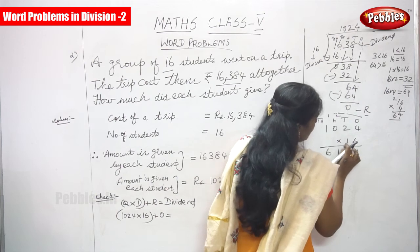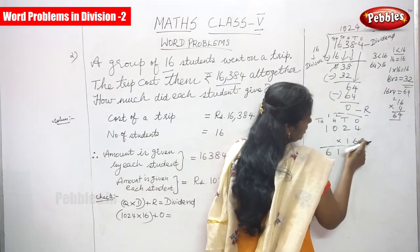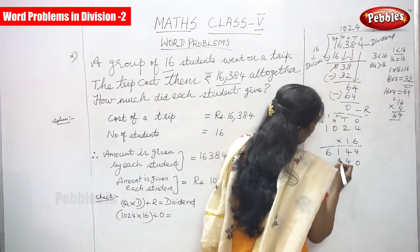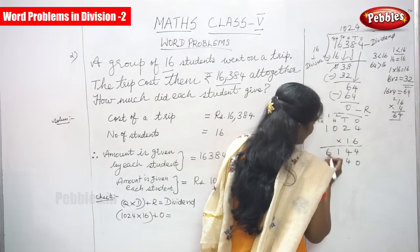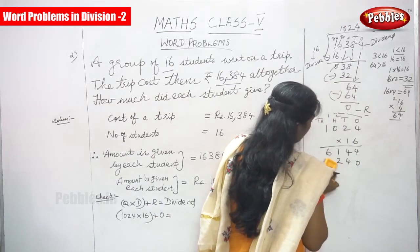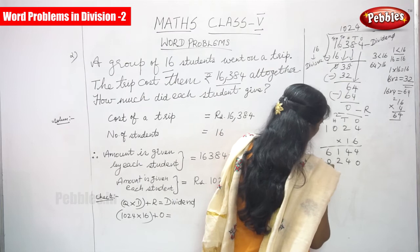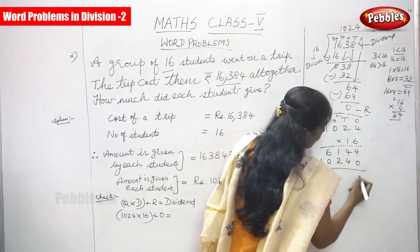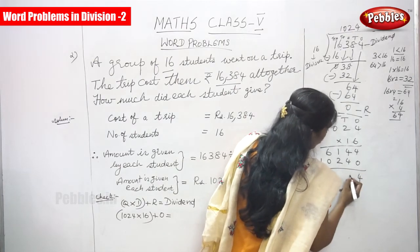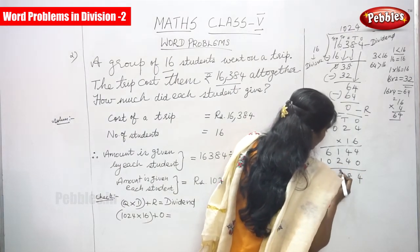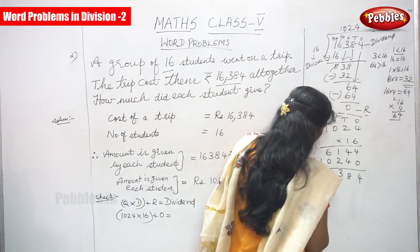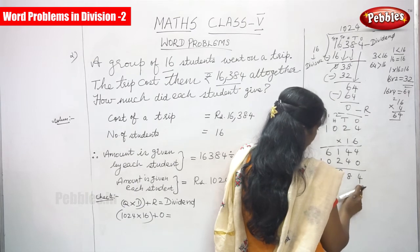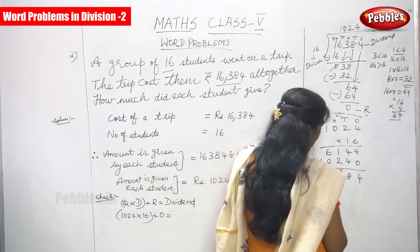Now multiply by 1, putting 0 in the ones place first. 1 times 4 is 4, 1 times 2 is 2, 1 times 0 is 0, 1 times 1 is 1. So we get 10240. Adding both: 4 plus 0 is 4, 4 plus 4 is 8, 2 plus 1 is 3, 6 plus 0 is 6, and 1. That gives 16,384.